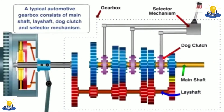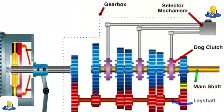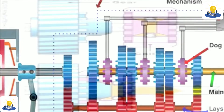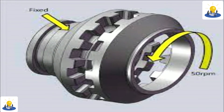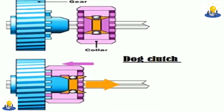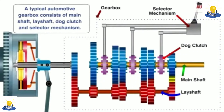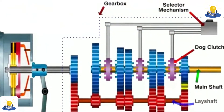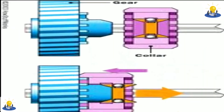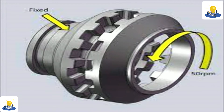In a modern constant mesh manual transmission, the gear teeth are permanently in contact with each other, and dog clutches — sometimes called dog teeth — are used to select the gear ratio for the transmission. When the dog clutches for all gears are disengaged and the transmission is in neutral, all of the gears are able to spin freely around the output shaft. When the driver selects a gear, the dog clutch for that gear is engaged via the gear selector rods, locking the transmission's output shaft to a particular gear set. This means the output shaft rotates at the same speed as the selected gear, thus determining the gear ratio of the transmission.